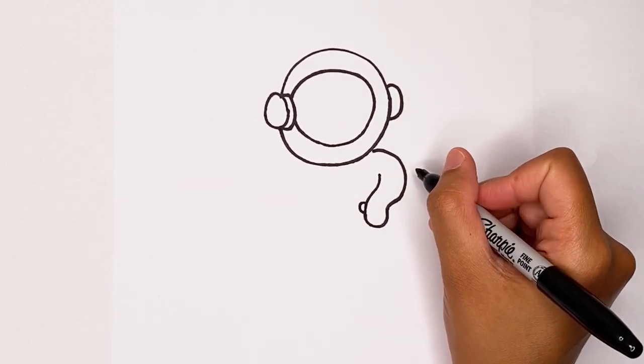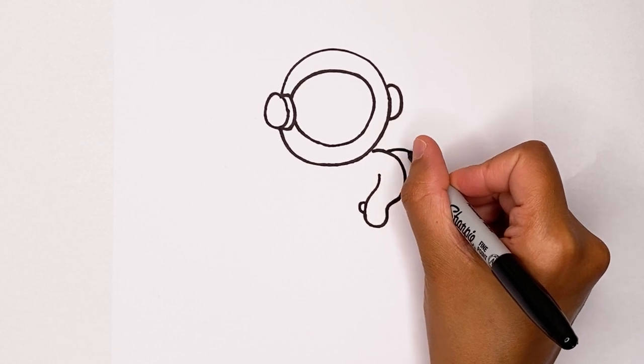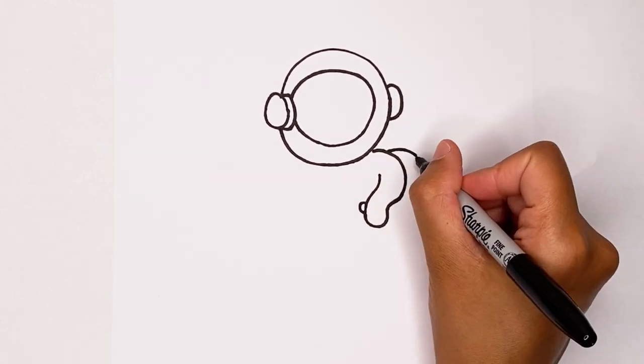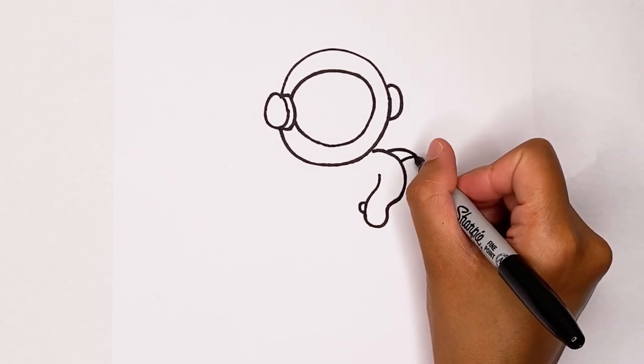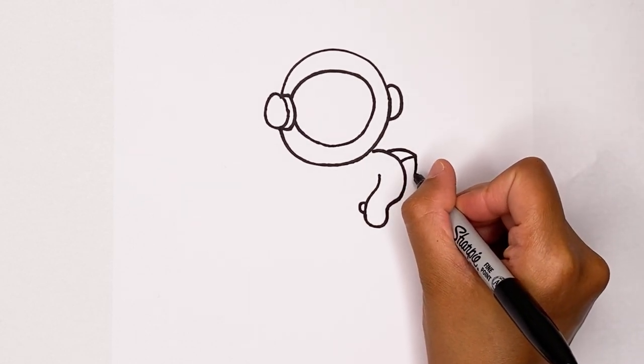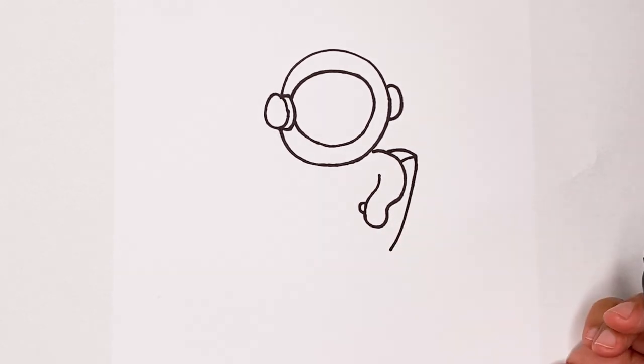Now we're going to make his little pack. We're going to bring a line out like this and then bring a line in. Let's start here and go down, down, down and then in a bit just like this.